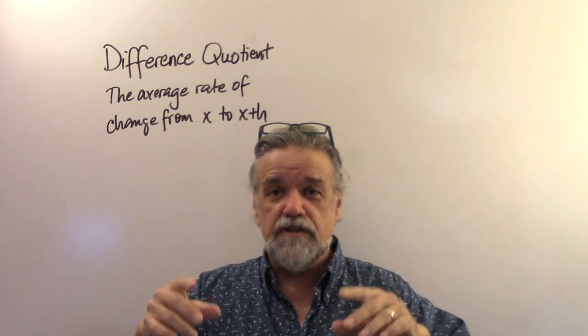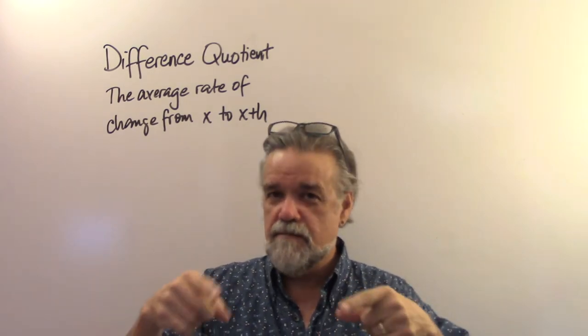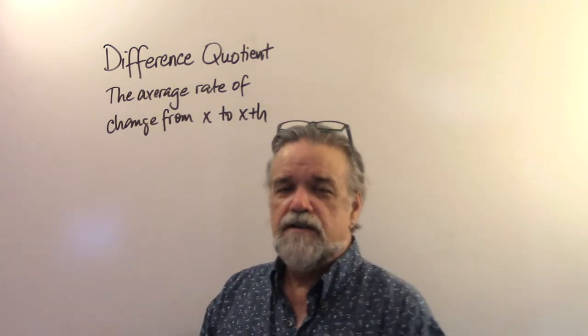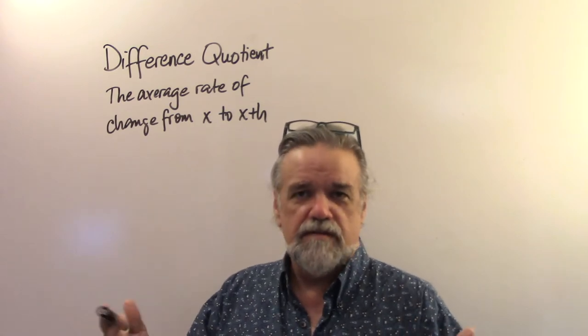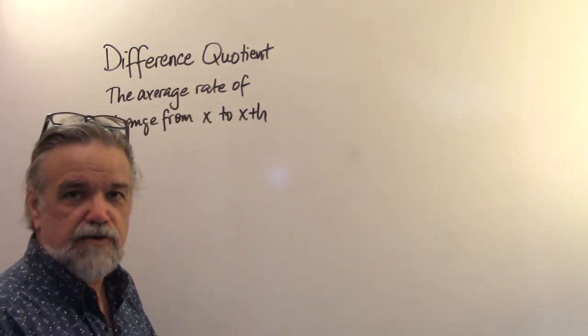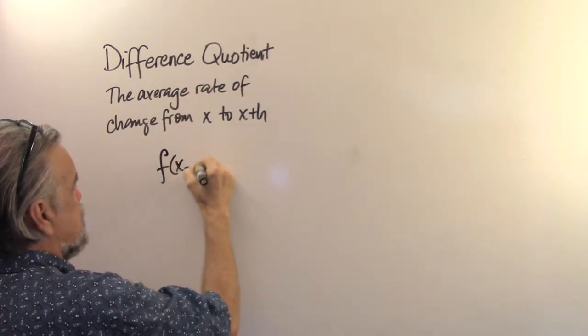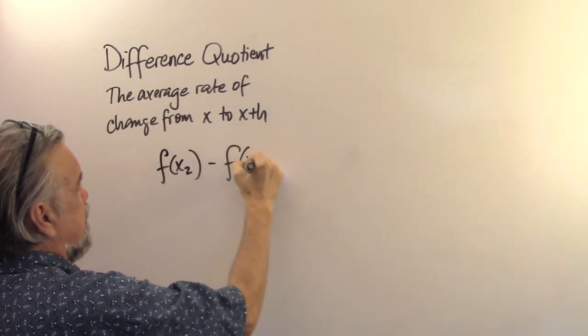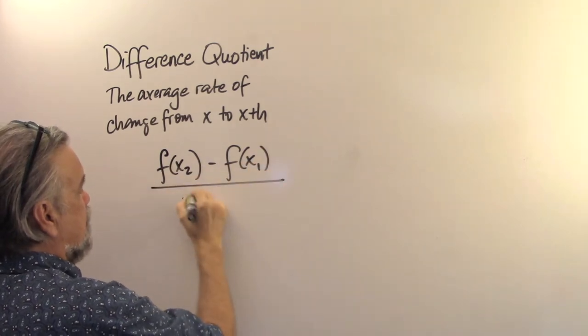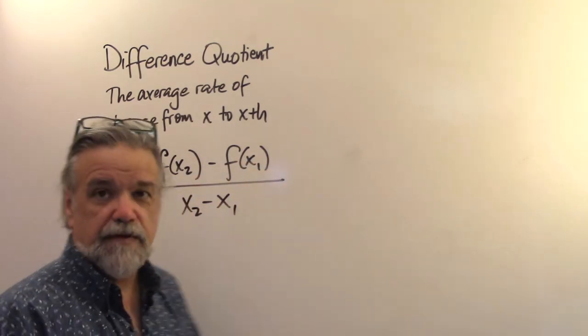If you know what the average rate of change is, great. If you don't, you might want to go find out. So, let's just review what the average rate of change is. The average rate of change of a function is f of x2 minus f of x1 over x2 minus x1.